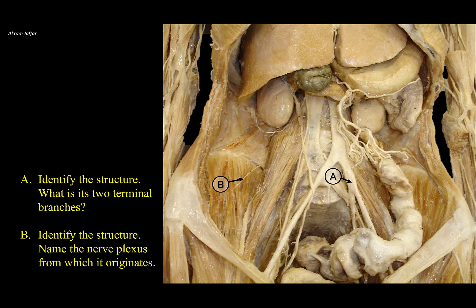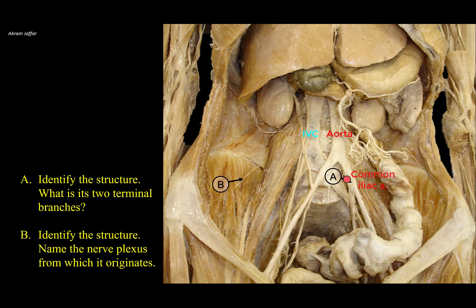This is a posterior abdominal wall dissection — a plastinated specimen — showing the abdominal aorta slightly to the left of the midline, with the inferior vena cava to its right. Following the aorta distally, it bifurcates into two common iliac arteries. Structure A is the left common iliac artery; it is called common because it soon divides into external and internal iliac arteries — its two terminal branches. The external iliac artery continues as the femoral artery distal to the inguinal ligament, supplying the lower limb, while the internal iliac artery dips into the pelvis providing the major blood supply for pelvic structures.